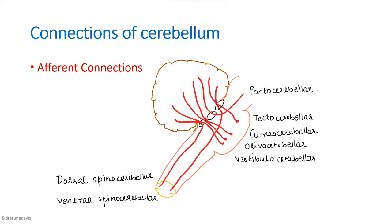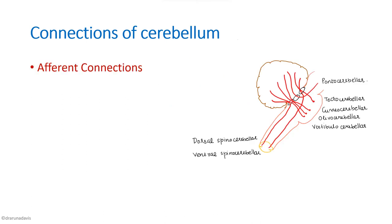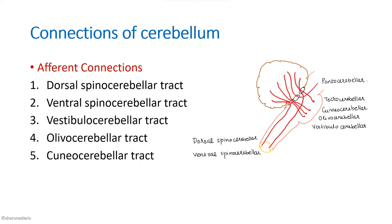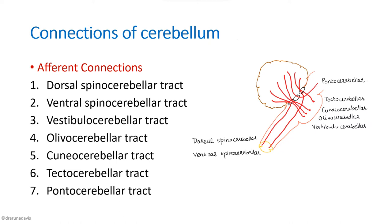From the inferior olivary nucleus we have the olivocerebellar tract, and from the cuneate nucleus we have the cuneocerebellar tract. The tectocerebellar tract originates from the tectum, which receives input from both the superior colliculus and inferior colliculus, carrying both auditory and visual impulses. The tectocerebellar tract enters the cerebellum through the superior cerebellar peduncle. When connections are asked, you can elaborate on each tract and mention one or two functions.